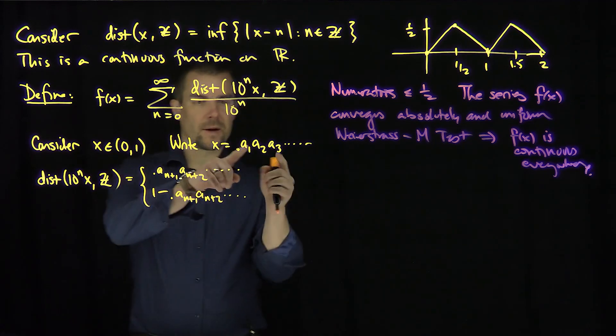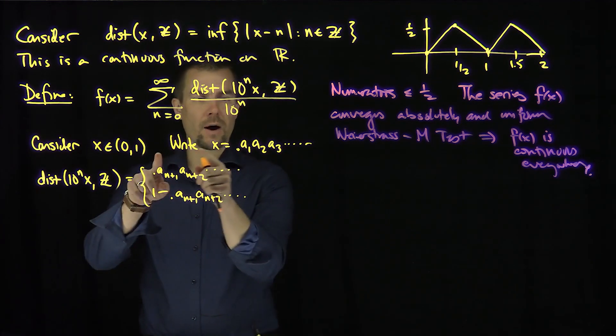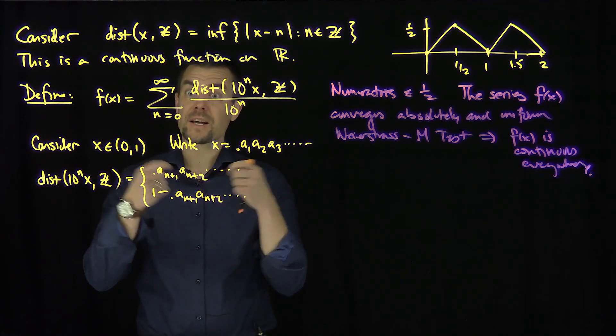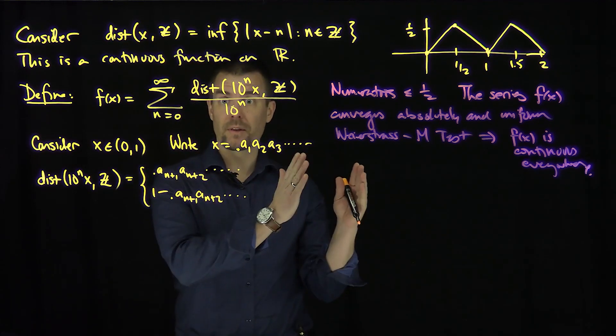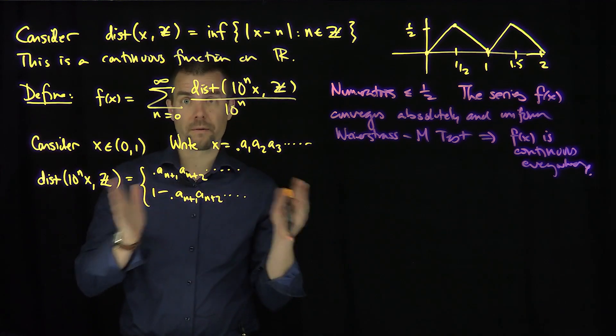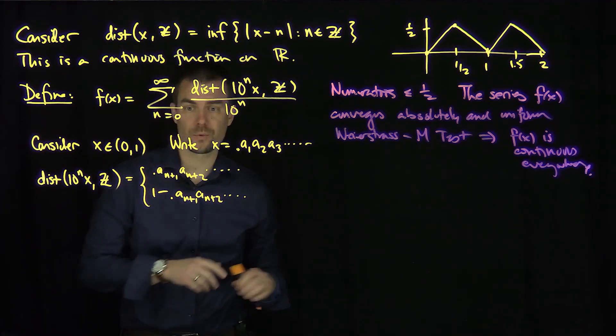And that just follows from the fact that if you multiply this number by 10, what's going to happen is you're going to pull out the first a1 through an as integers. And so you've basically just shifted the function over and so it won't affect the calculation at all.